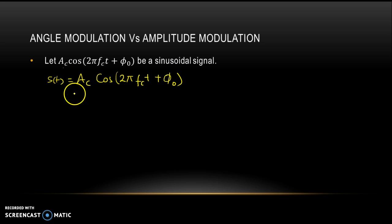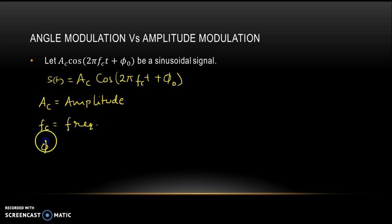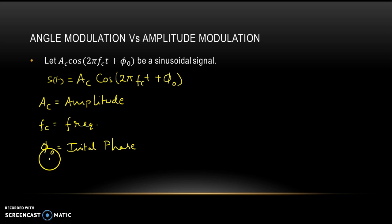Let us understand the terminologies related to this carrier signal. AC is the amplitude of the carrier signal. fc represents the frequency of this carrier signal. And φ₀ is the initial phase angle of this carrier signal.